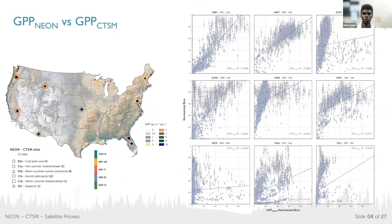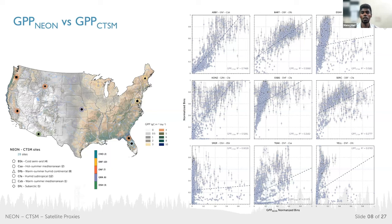Shifting focus to satellite-based observations, the plot represents daily-binned GPP observations on the x-axis versus CTSM simulations on the y-axis, with data normalized to fit all proxies. The evergreen needle forest sites show a very good relation between NEON observations and CTSM simulations. Vertical lines on the bins represent the standard error within the simulation.